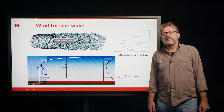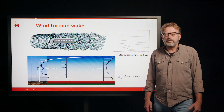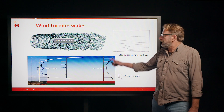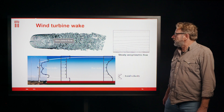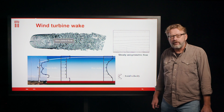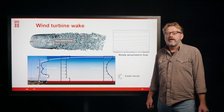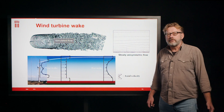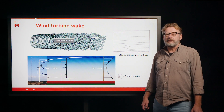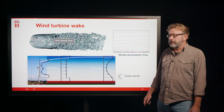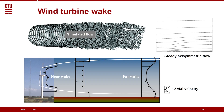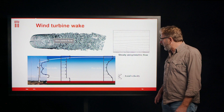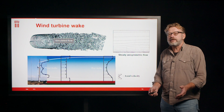If you look at some visualizations of what can happen behind a wind turbine, you can see in the upper visualization here, which is a simulated flow case, that the flow behind a wind turbine is rather complex. However, if you start to average it, it seems much simpler, as you can see in another simulation — a steady axisymmetric flow simulation — where there are very nice streamlines. The wind turbine is shown here as a straight line, but this is a fully 3D computation, though axisymmetric.